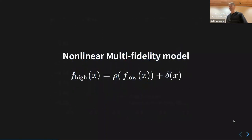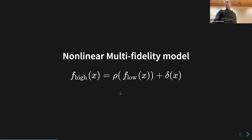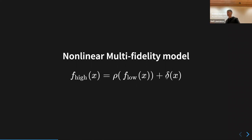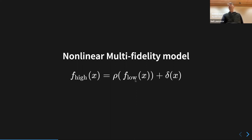The other approach in the multifidelity setting is to actually do a nonlinear multifidelity model. In this case instead of having rho as a scalar factor, we have rho as a function. What you're saying is that the high fidelity is a composition of two functions — one is rho and one is F low. So F low now goes through a nonlinear function instead of just being multiplied. We can add in some sort of noise term; the delta here implies that's just white noise. So rho here is a function of that low-fidelity function.